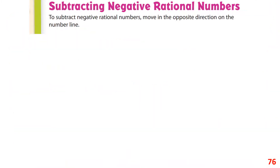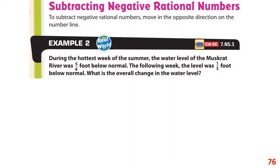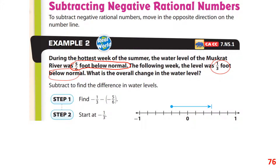Subtracting negative rational numbers: you move in the opposite direction on the number line. In this example, during the hottest week of summer the water level of the river was five-sixths of a foot below normal — that's a negative — and the following week it was one-third foot below normal, also negative. The word 'difference' means subtraction.